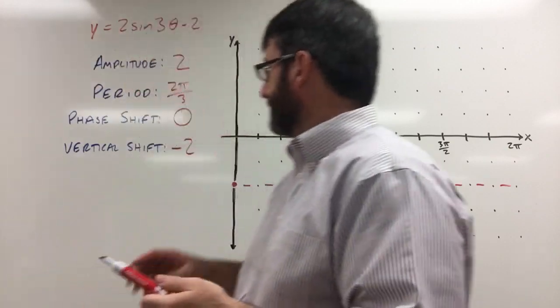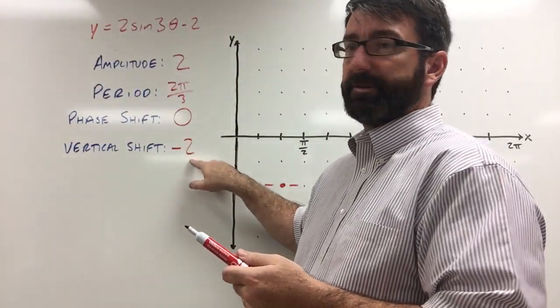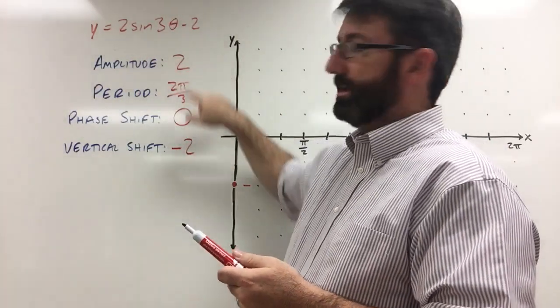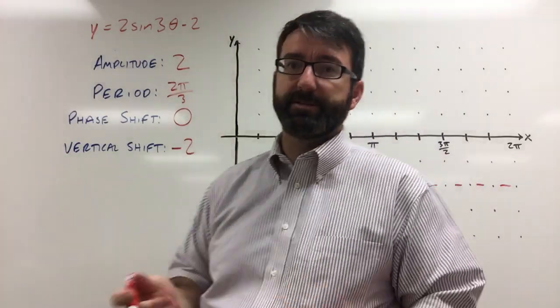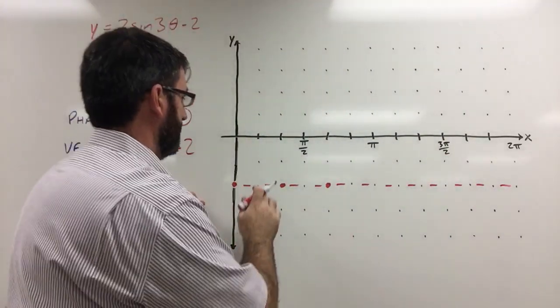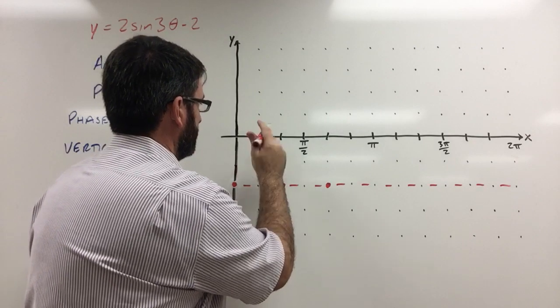Now, our maximum is going to be the vertical shift plus the amplitude. So negative 2 plus 2 is going to be 0. So our maximum is 0. We're going to reach that right here.